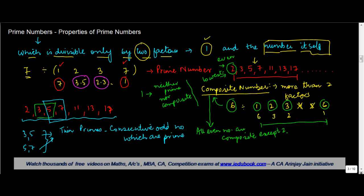Similarly, five and seven are also twin primes. Now there is also something called a prime triplet. Just like the word twin primes, triplet suggests there have to be three prime numbers which are consecutive. If you notice, three, five, and seven are three consecutive odd numbers which are all prime, so we call them a prime triplet. These are some of the properties of prime numbers.